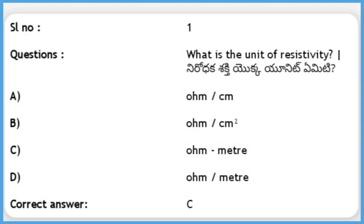What is the unit of resistivity? Options: A) ohm per centimeter, B) ohm per centimeter square, C) ohm meter, D) ohm per meter. The answer is C, ohm meter. The unit of resistivity is ohm meter.